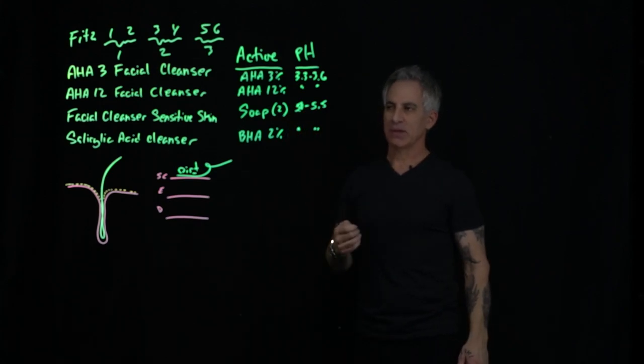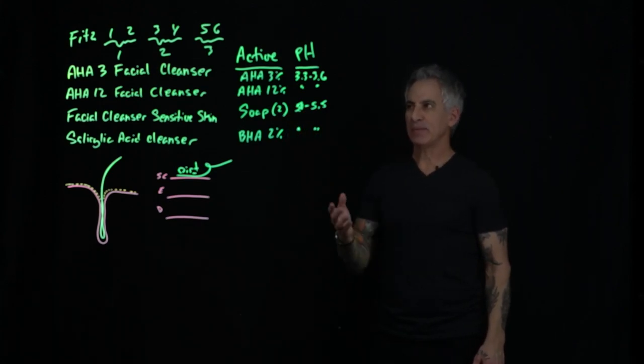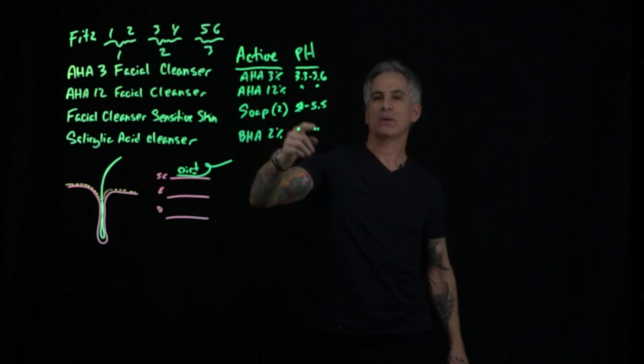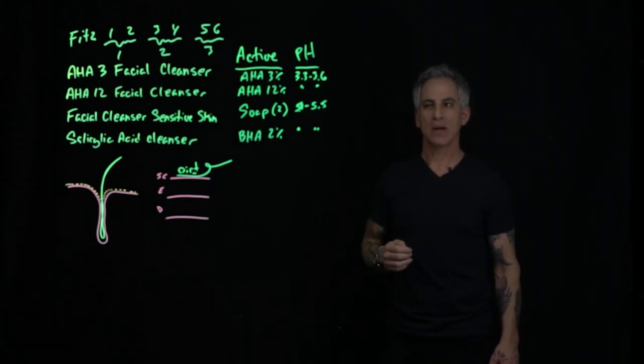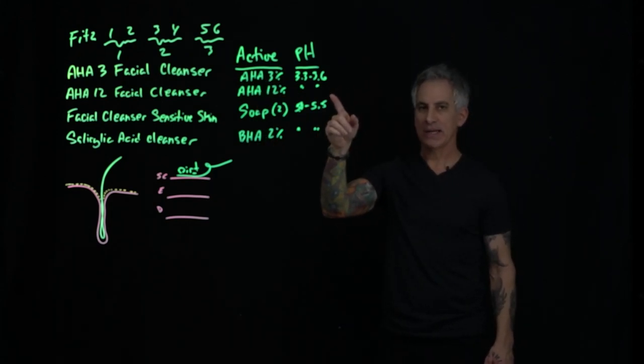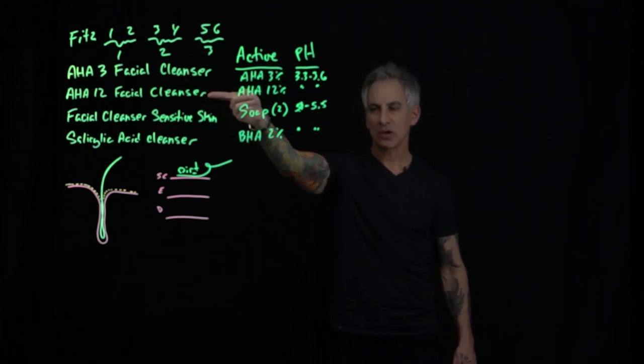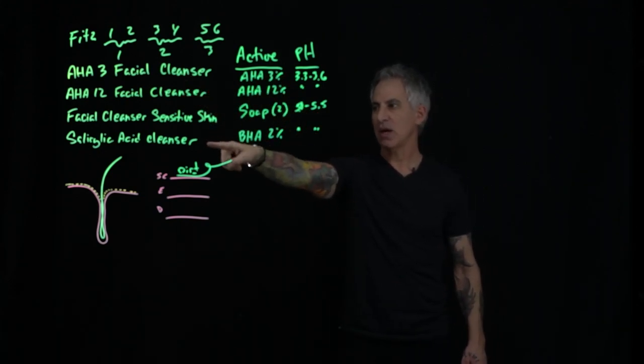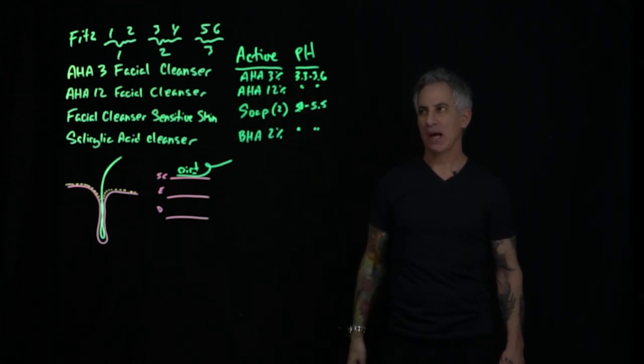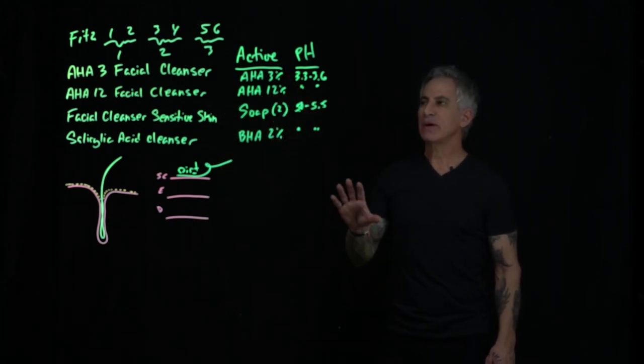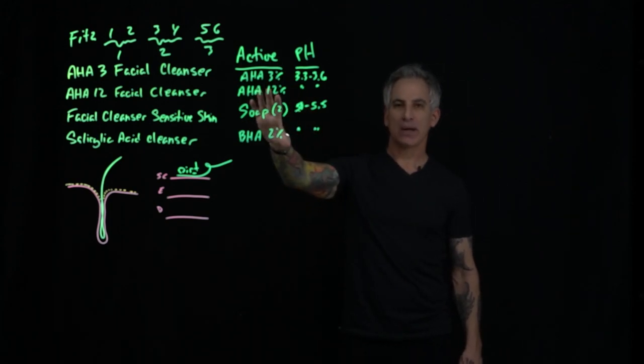All right, so AHA-3 facial cleanser, that can be applied to all, one, two, and three. AHA-12, no, it cannot be. Facial cleanser-sensitive skin can be applied to all three on the small scale. Salicylic acid cleanser also can be applied to all three. There is a way to make any of these products less in strength.